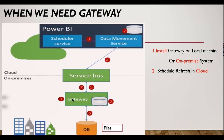There are two steps involved. First is to install a gateway on your local machine or on-premise system. The second step is to schedule a refresh in the cloud, so that whenever the data gets updated at some frequency, you will get a scheduled refresh in the cloud and your data gets updated. If the file is updated tomorrow, doing a refresh will reflect the latest data in your cloud report. In this video we're going to see the first step — installing a gateway. In the next video we'll cover scheduled refresh in the cloud.